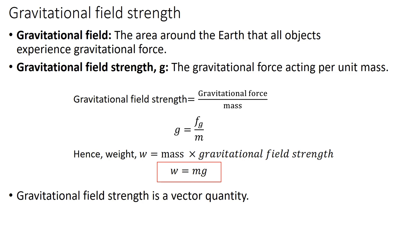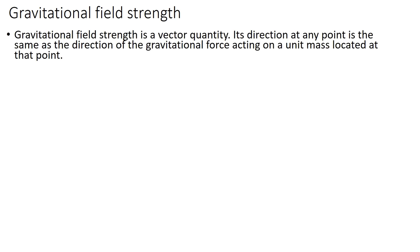Gravitational field strength is a vector quantity. Its direction at any point is the same as the direction of the gravitational force acting on a unit mass located at that point. This diagram illustrates the gravitational field strength of the earth. The arrow indicates the direction of the force that a mass will experience in the gravitational field of the earth.